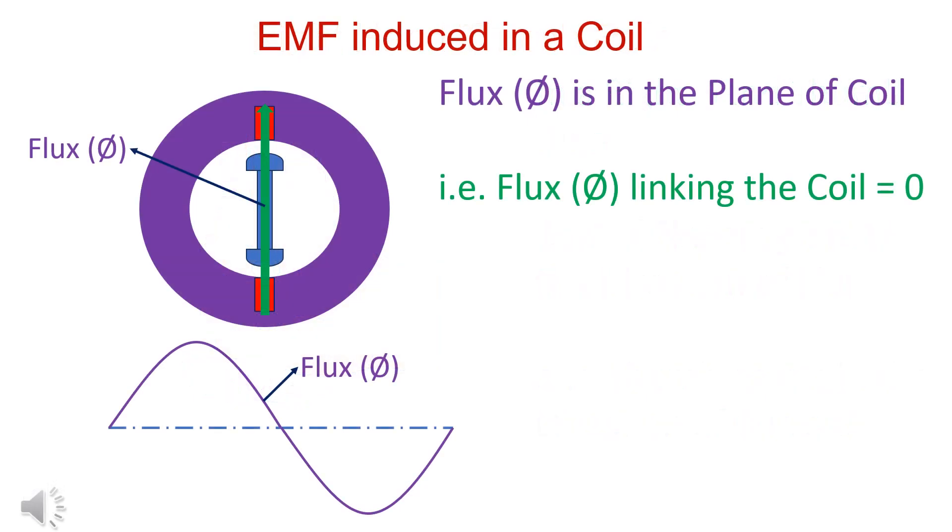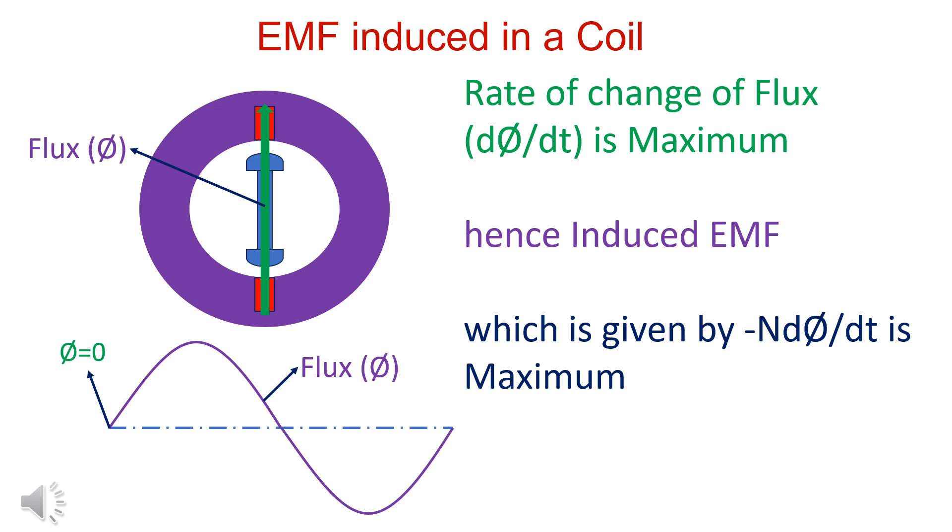Poles of the generator are just below conductors. EMF induced in the conductors is maximum or zero. Flux is in the plane of a coil, that is flux linking the coil is zero. However, the rate of change of flux linking the coil is maximum. Hence, induced EMF is maximum.